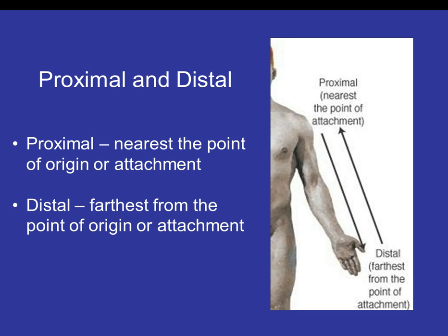Proximal and distal are terms mostly used when talking about appendages — our arms and legs. Proximal means nearest the point of origin or attachment. For the arm, the point of attachment is at the shoulder, so that's the proximal end. Distal means furthest from the point of origin or attachment — your fingers and hands are the distal end of the arm. Similarly, for the legs, your toes and ankles are the distal end, while your hip is the proximal end since the leg attaches to the body at the hip.